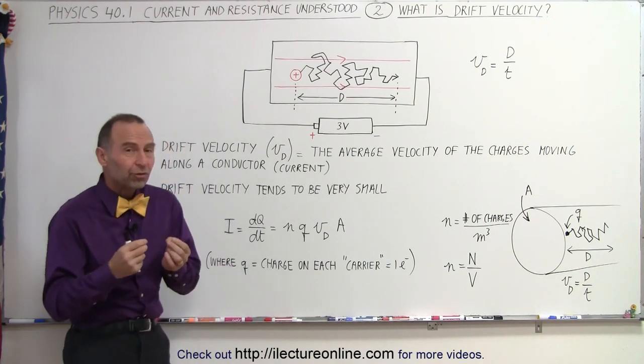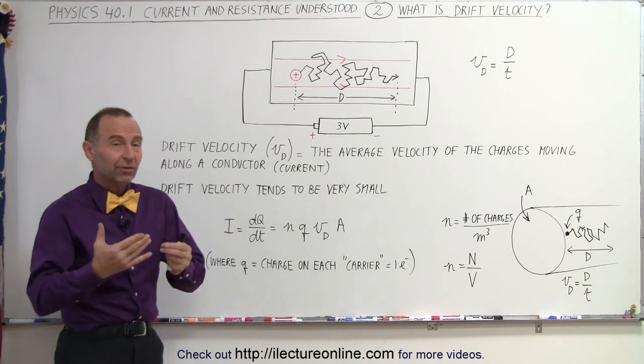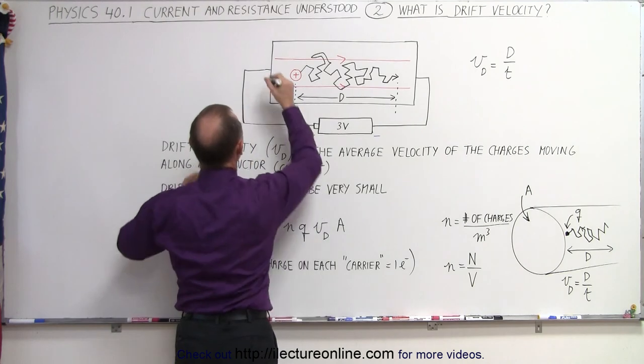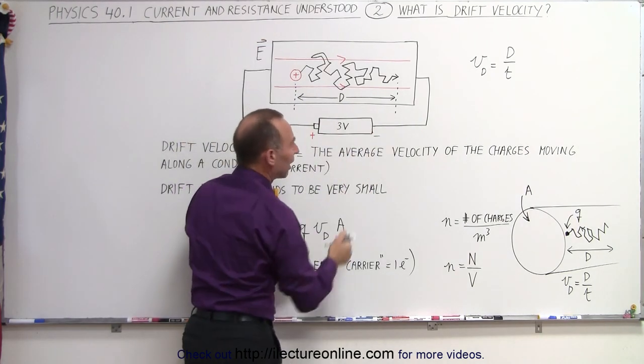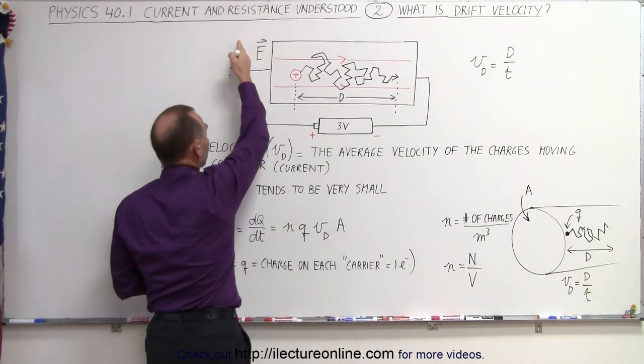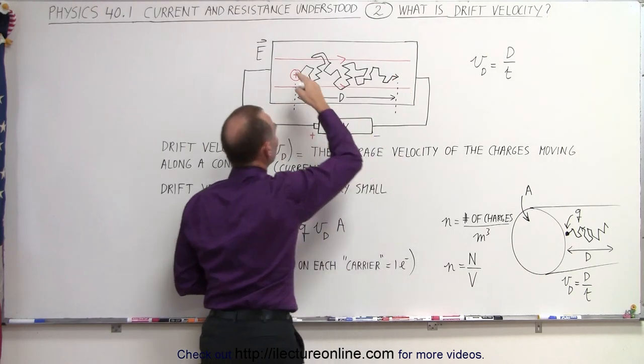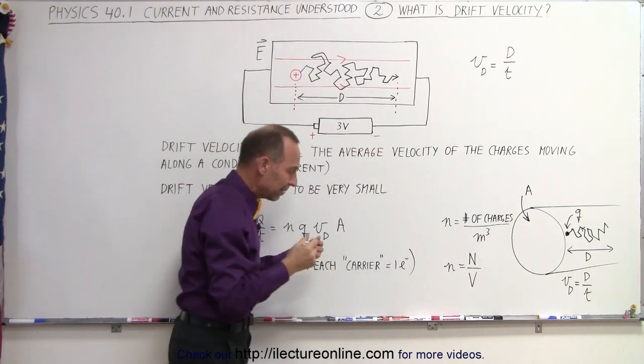As it turns out, charges, such as in this case hypothetical positive charges moving along a conductor, move in the same direction as the electric field, which is caused by a difference in potential. In this case, we have a 3-volt battery, so we have a high potential here and a low potential there. We have an electric field from left to right, so any positive charges will feel a force pushing them to the right.